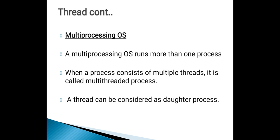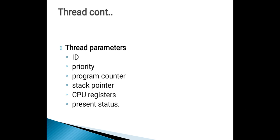A thread can also be called a daughter process. The thread parameters are: thread ID, thread priority, program counter, stack pointer, CPU registers, and present status.